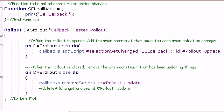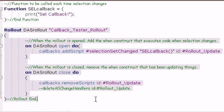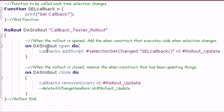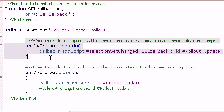At the very top here, we just have our test function that's being called every time the selection changes, and down here is our rollout. It's a very simple rollout. There's actually no user interface in it whatsoever. Right here, we have our onOpen event.